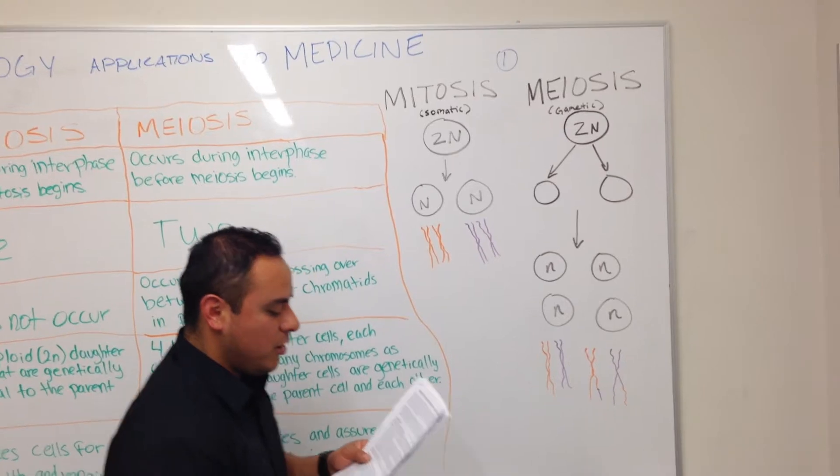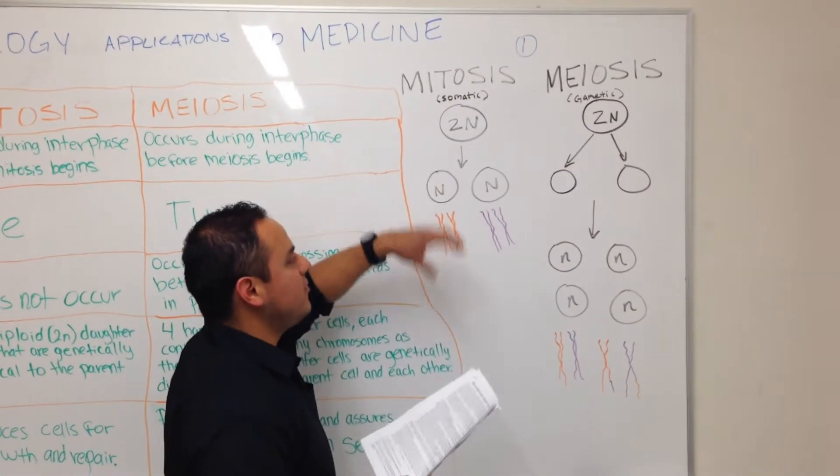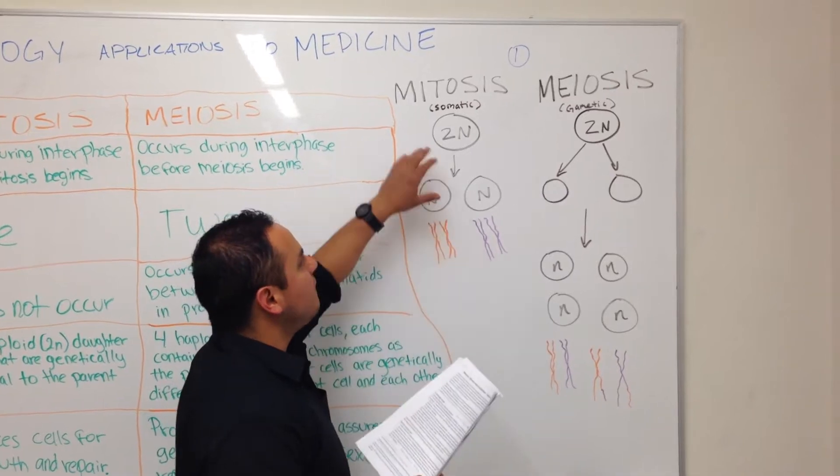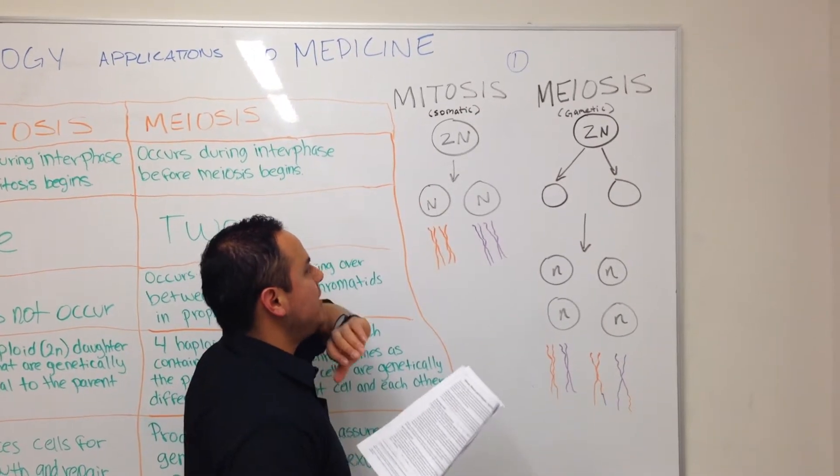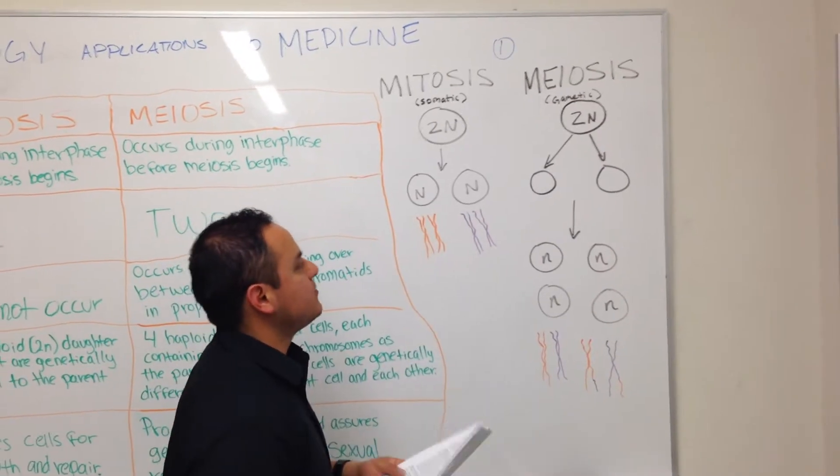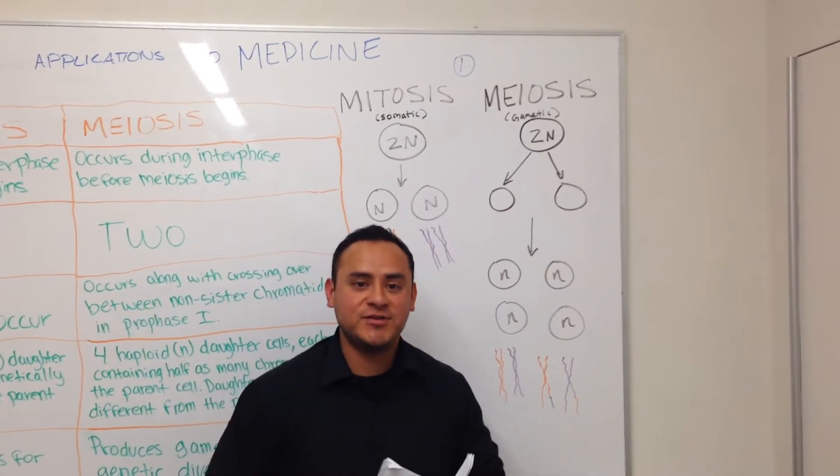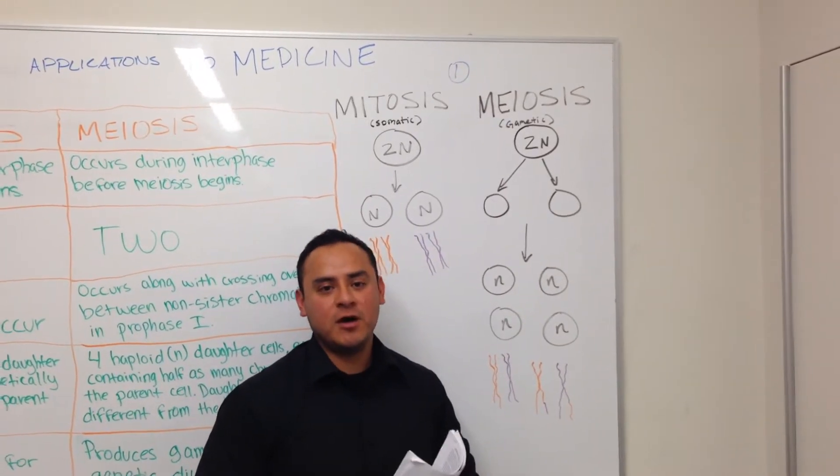As we can see here, we will also be looking at the patterns that each one of the cells go through. So for somatic, for mitosis, we have reproduction leading to two separate cells, where in meiosis we have reproduction which leads to four separate daughter cells.